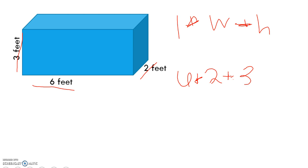6 times 2 is 12. And now I'm left with 12 times 3. 12 times 3 is 36, and so we have our final answer of 36 feet cubed.